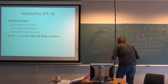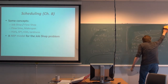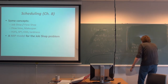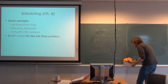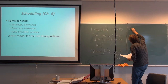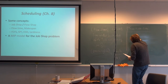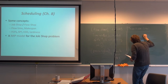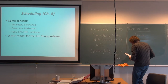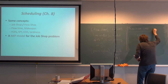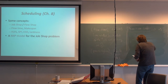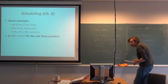The mean flow time is found by adding together the flow time of all jobs and dividing by the number of jobs N. So we sum flow time over all i from 1 to N, then divide by N to find the average or mean flow time.